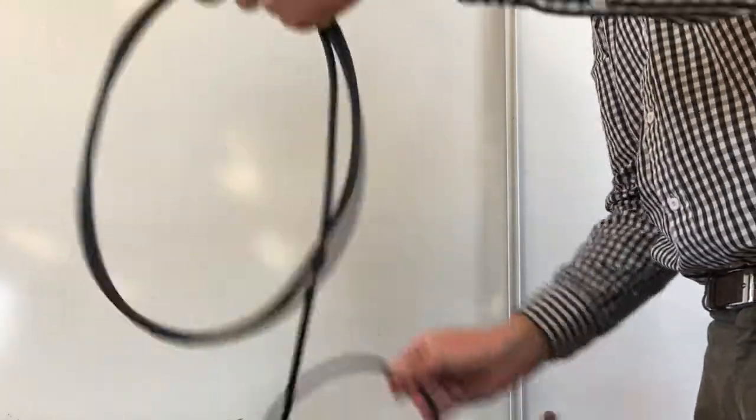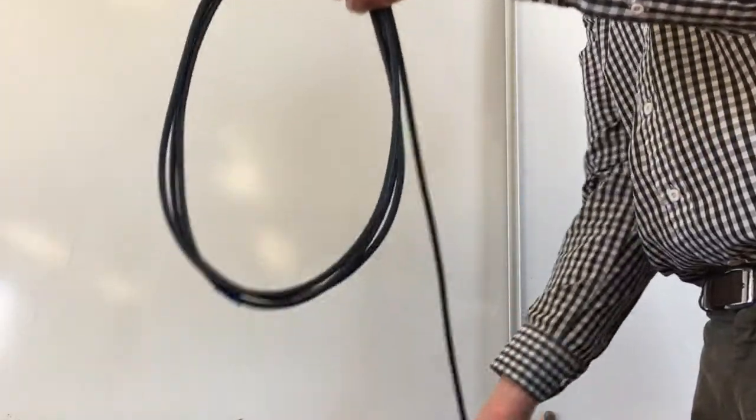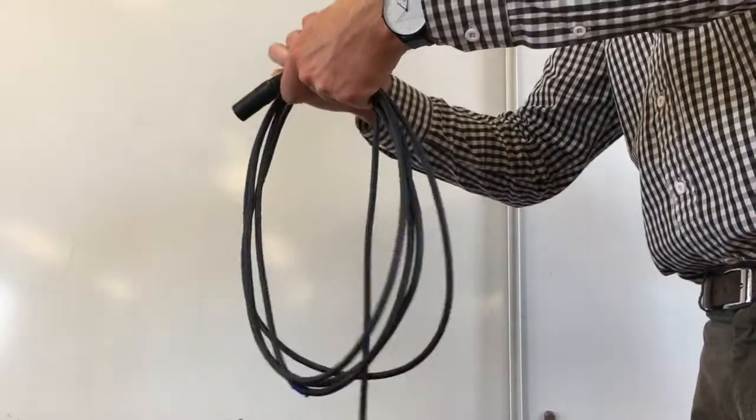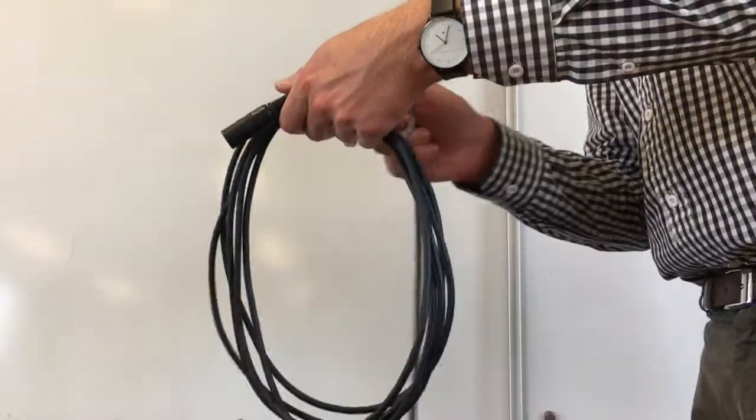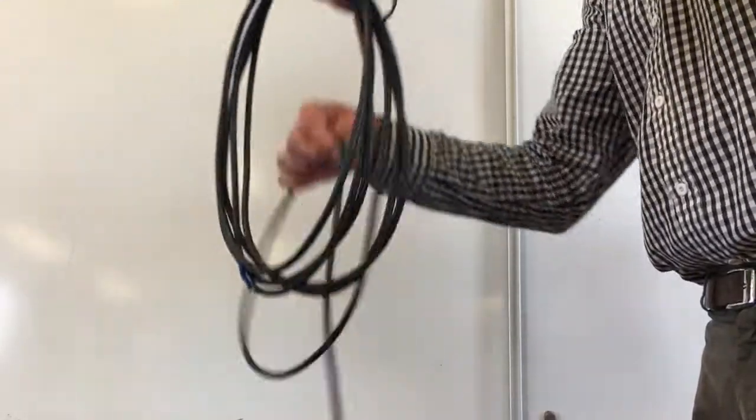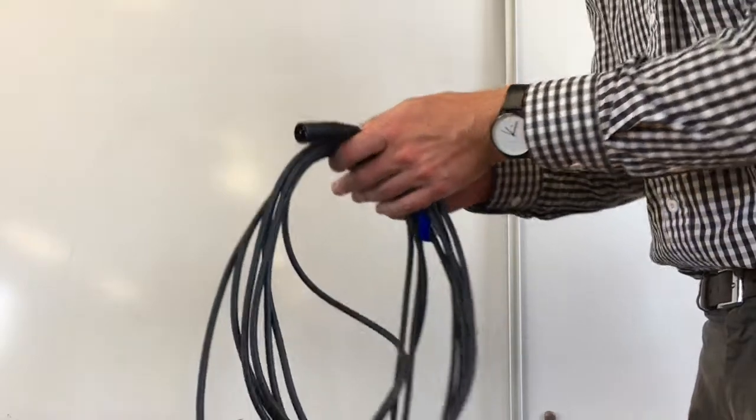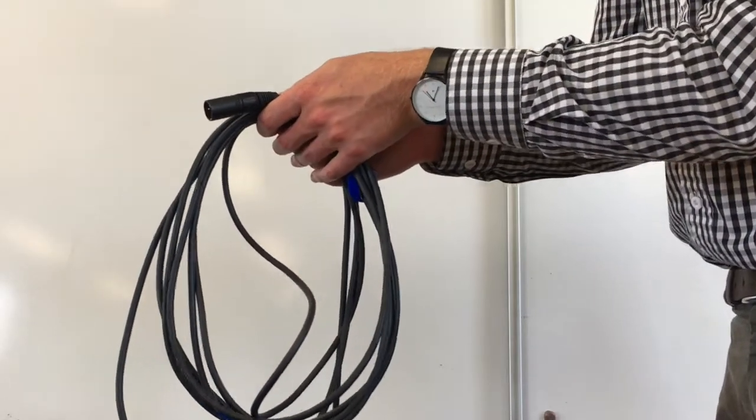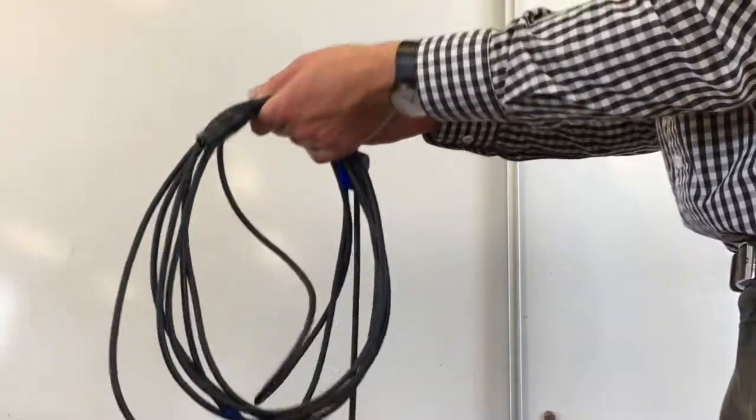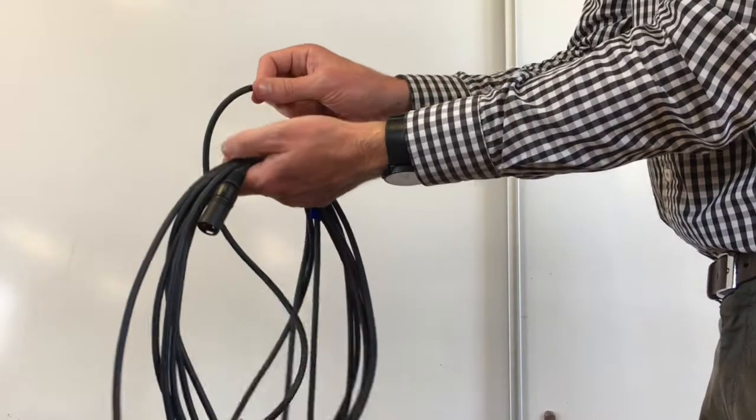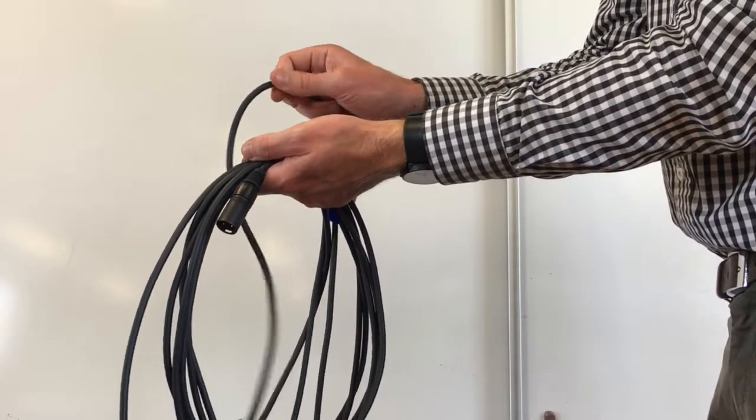You might get a situation where it won't make a nice loop, you get a kink in it like that. That is just the cable being twisted. Between your index finger and your thumb, you can roll it. If you roll it and it gets worse, go the other way, and eventually it should make a nice comfortable loop.